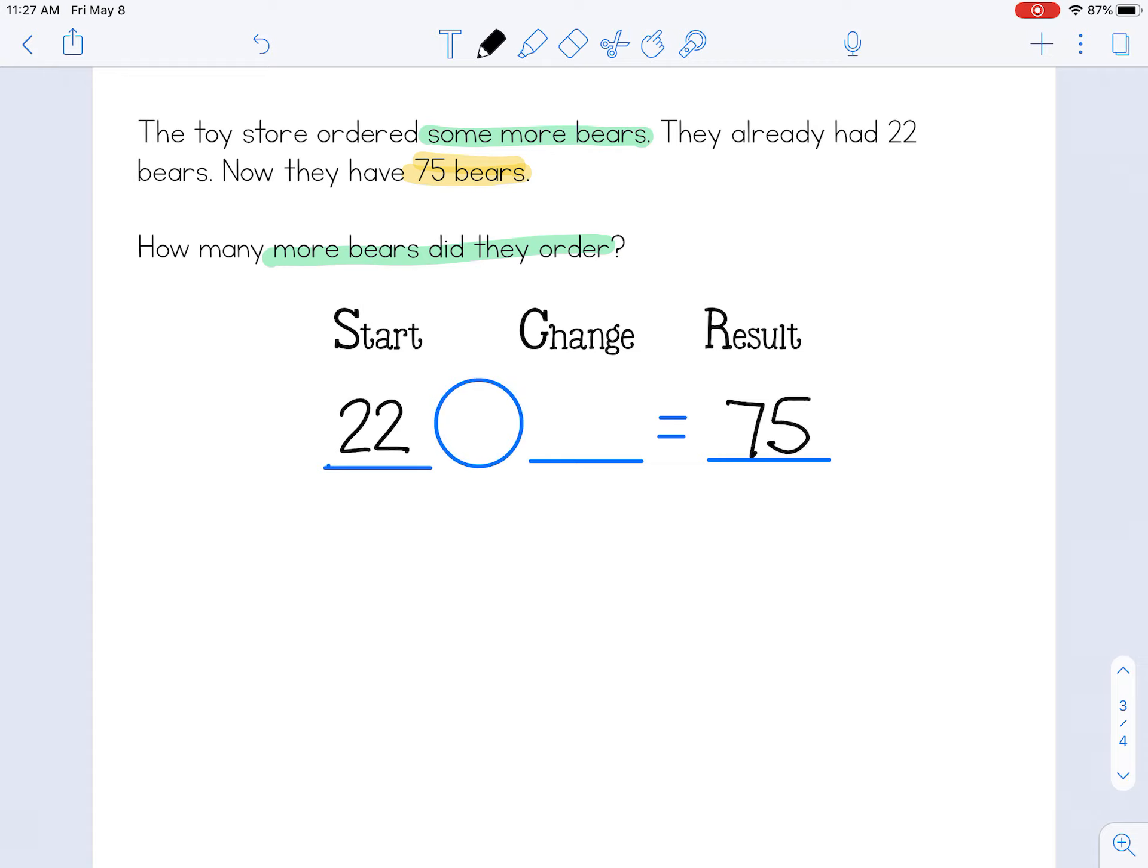And if the toy store ordered some more bears and they had started with 22, we then know where does our x go? Good. At the change, that's what changed.